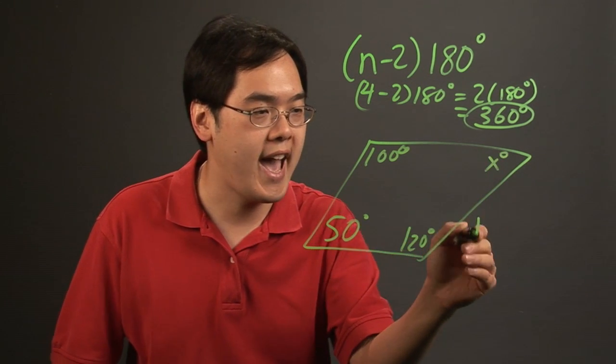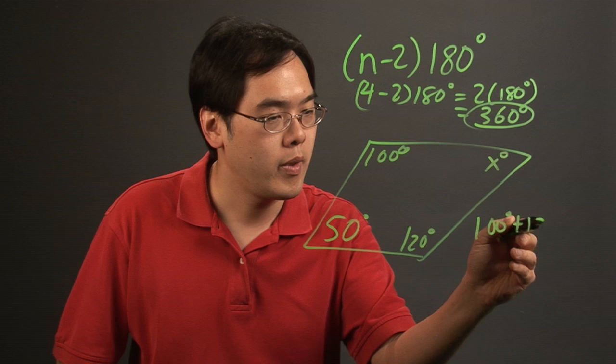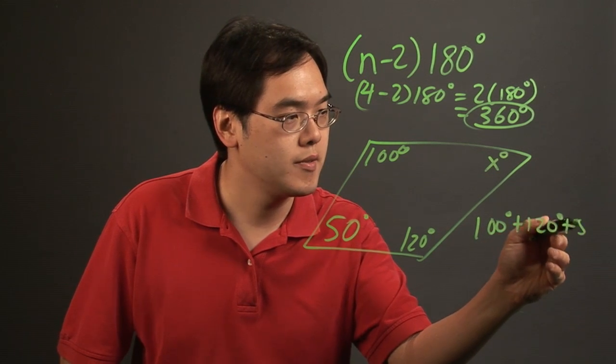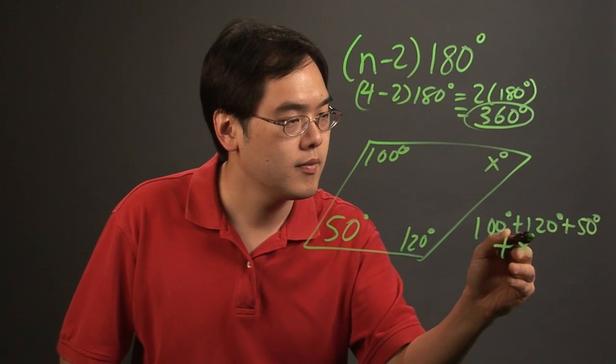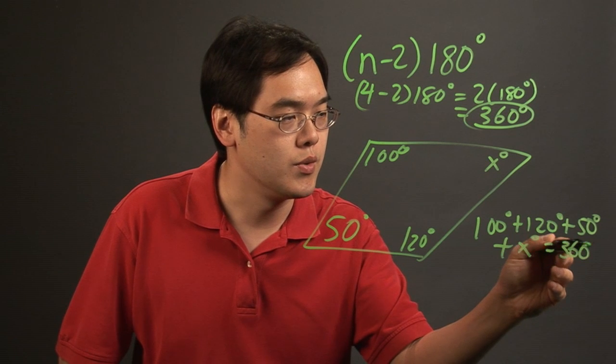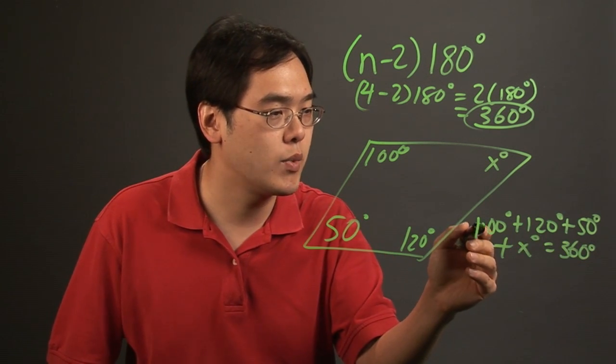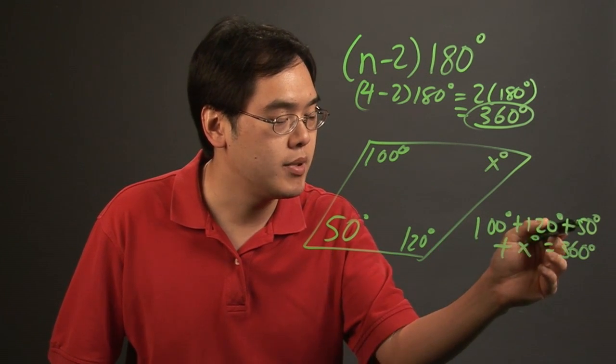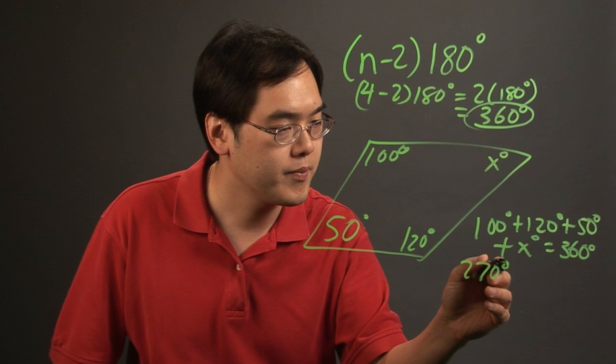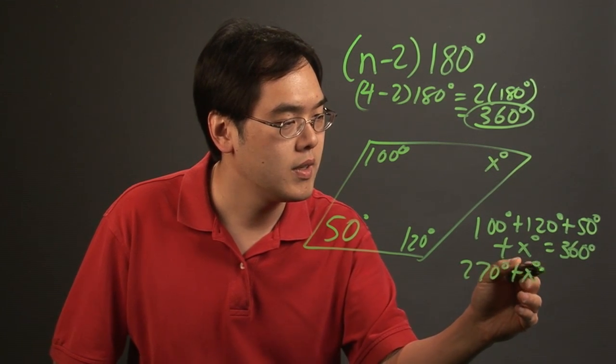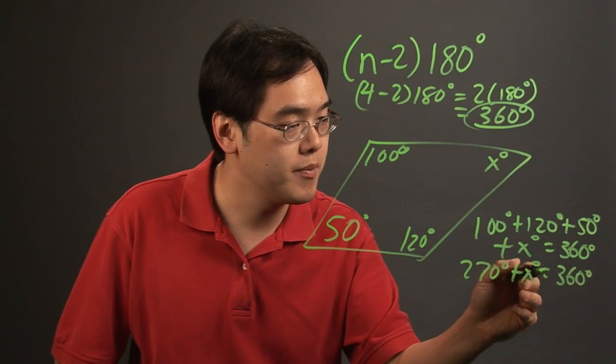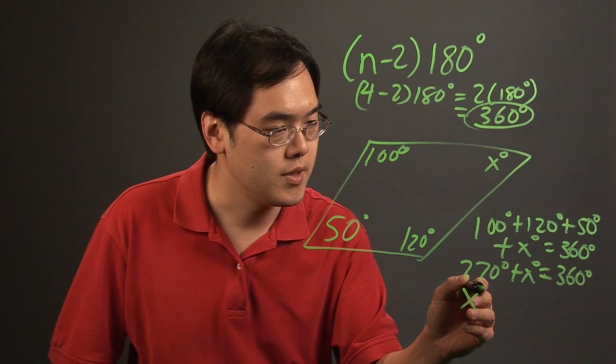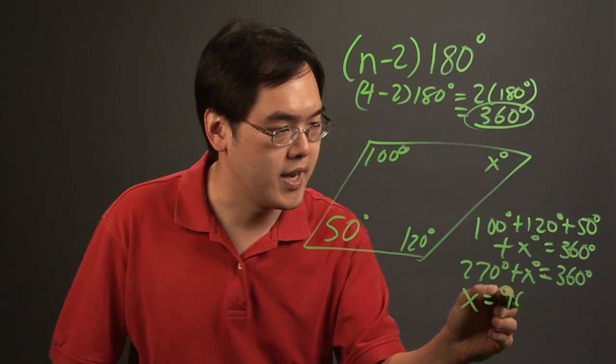all you need to do is add all these angles and set it equal to 360. So the idea here is 100 plus 120 is 220 plus 50 is 270. And then just do the basic algebra, you're going to have x is going to give you 90 degrees.